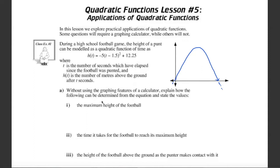Okay, without the calculator let's explain how the following can be determined. First, the maximum height of the football. Since this is the equation, we recognize what kind of form this is — this is the vertex form, also called standard form, which means we can identify the h value and the k value.